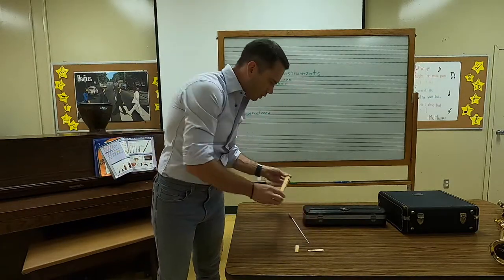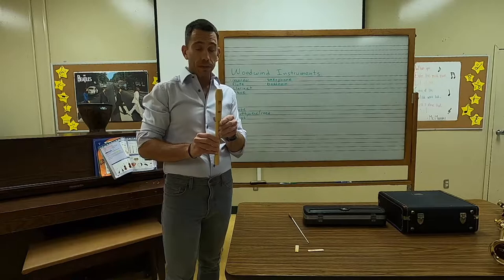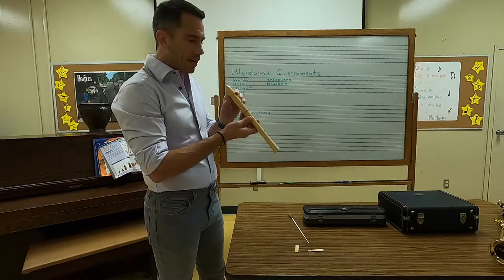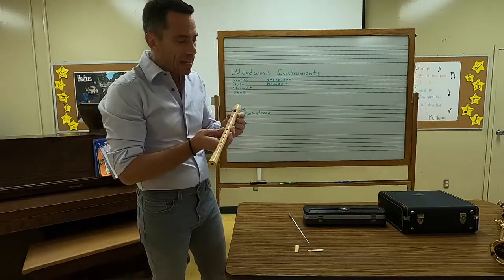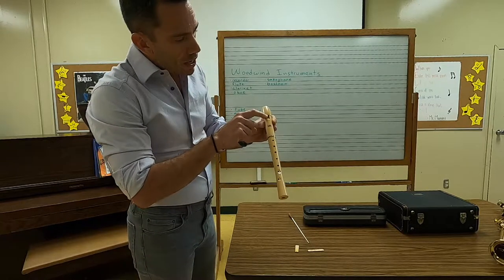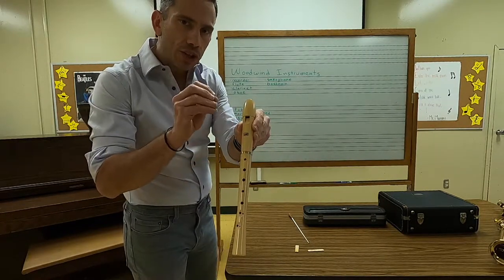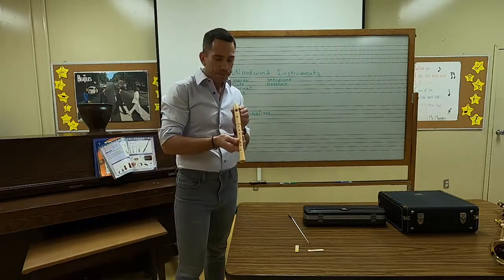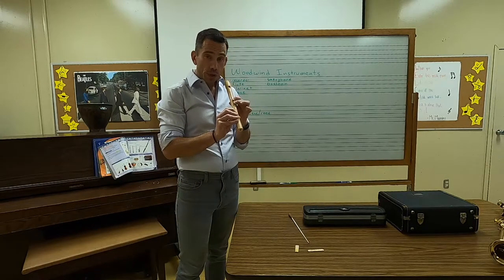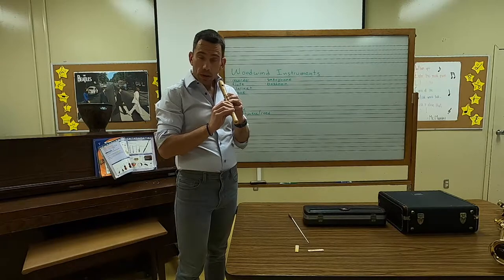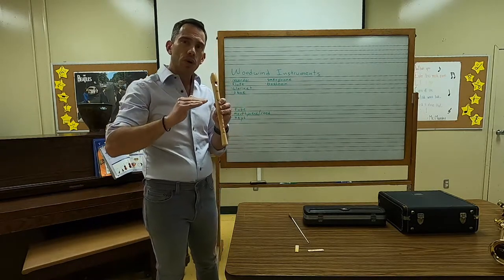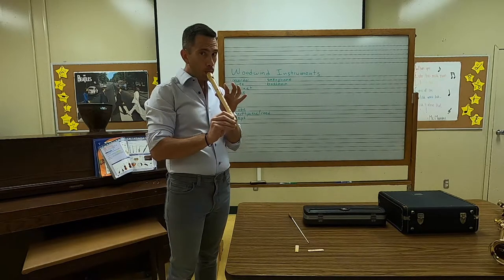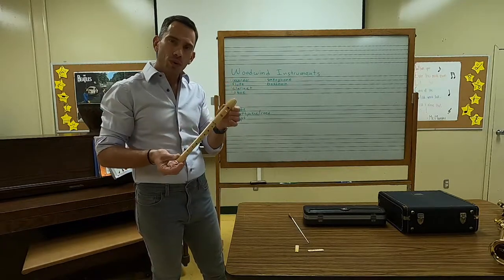Let's take a look at a recorder. This instrument's been around for hundreds of years. This one's made of plastic, but they used to be made of wood. To play the recorder, you blow in right here, and some of the air is going to split right here. When that air splits, it causes it to vibrate, and that's how the recorder makes the sound. If you cover these holes, you make the instrument a little bit longer — each hole you cover makes the pitch lower and lower. And that's how the recorder works.